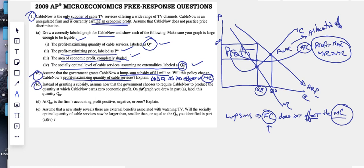Instead of granting us something, assume now that the government chooses to require cable to produce the quantity at which cable now earns a zero economic profit. We know zero economic profit is also called break even, maybe fair return. They used to call it fair return. I haven't seen that in a very long time.